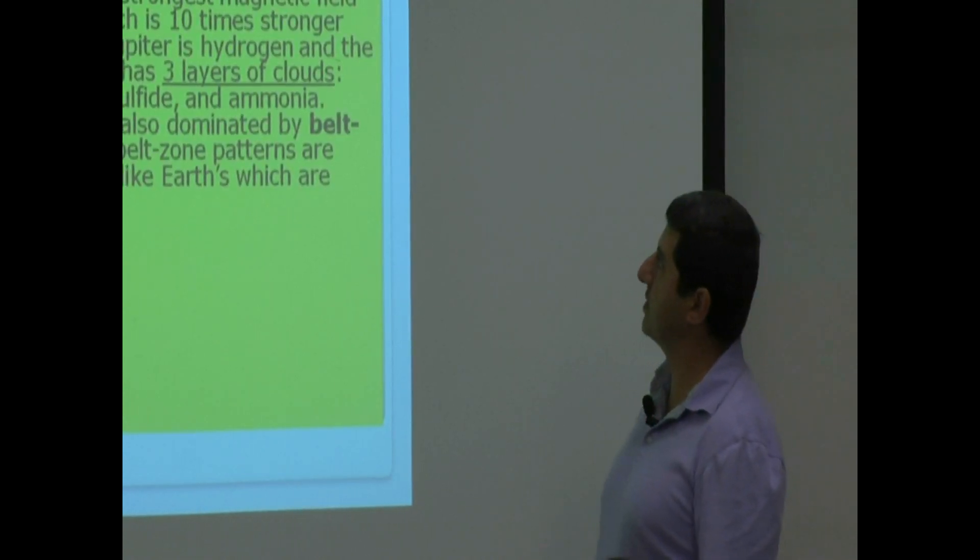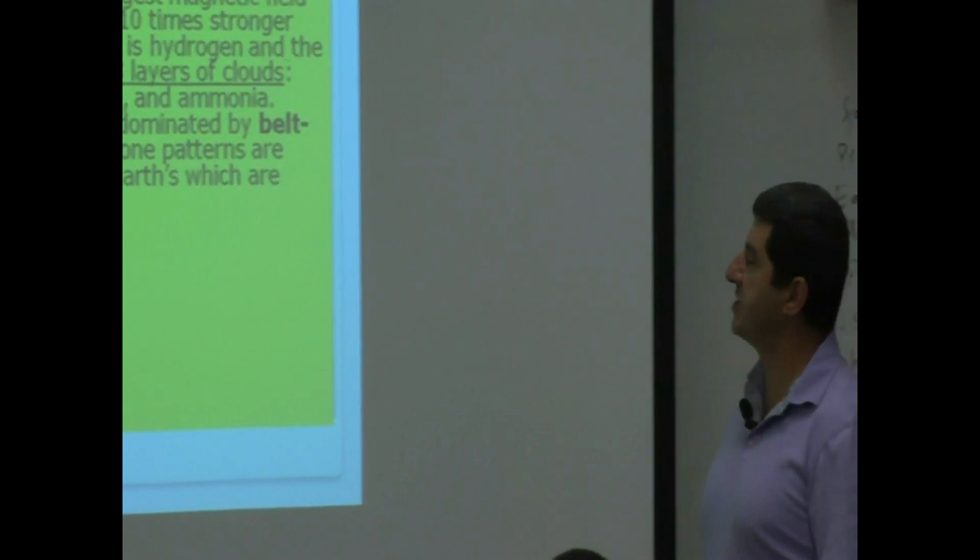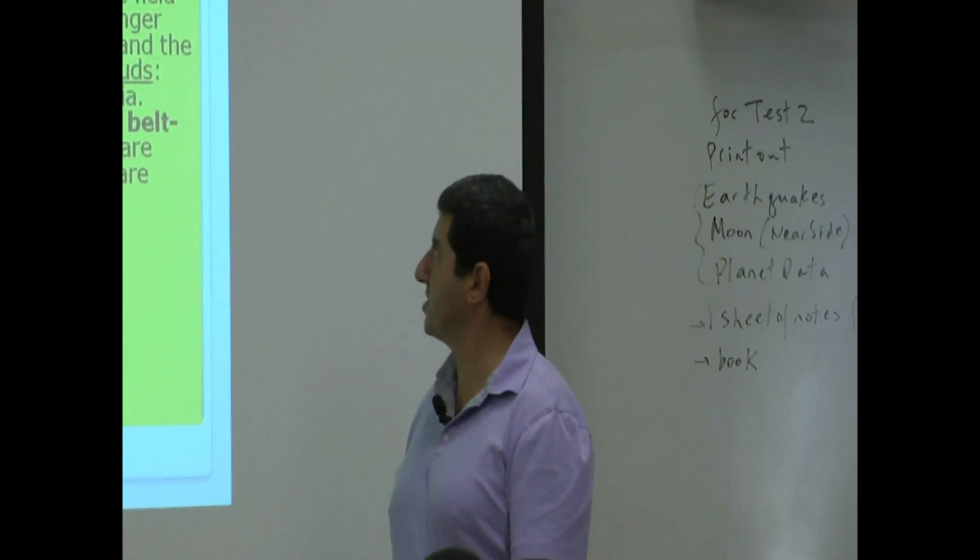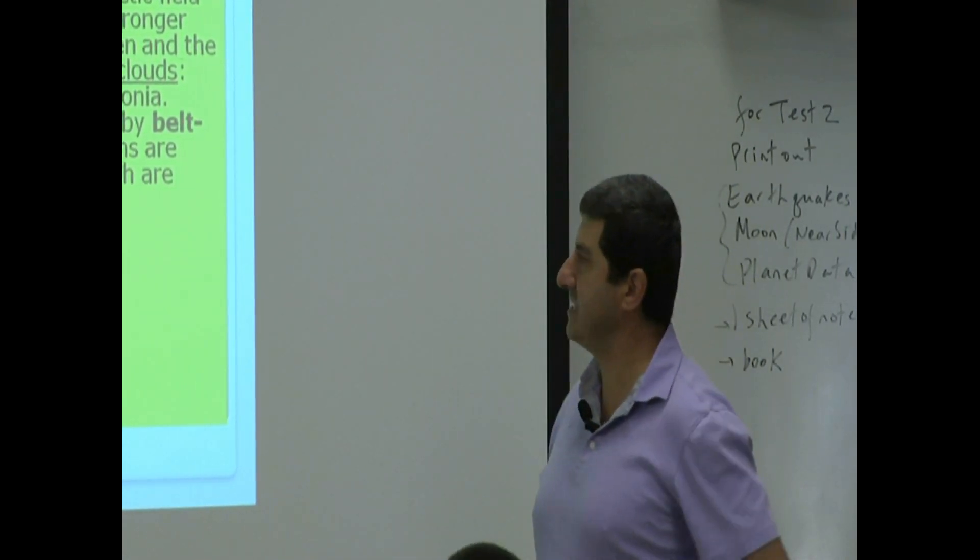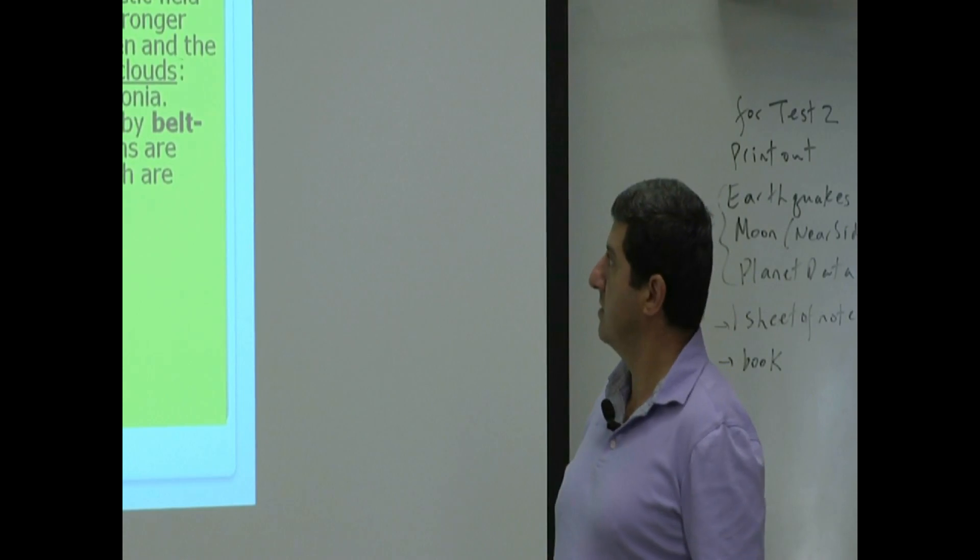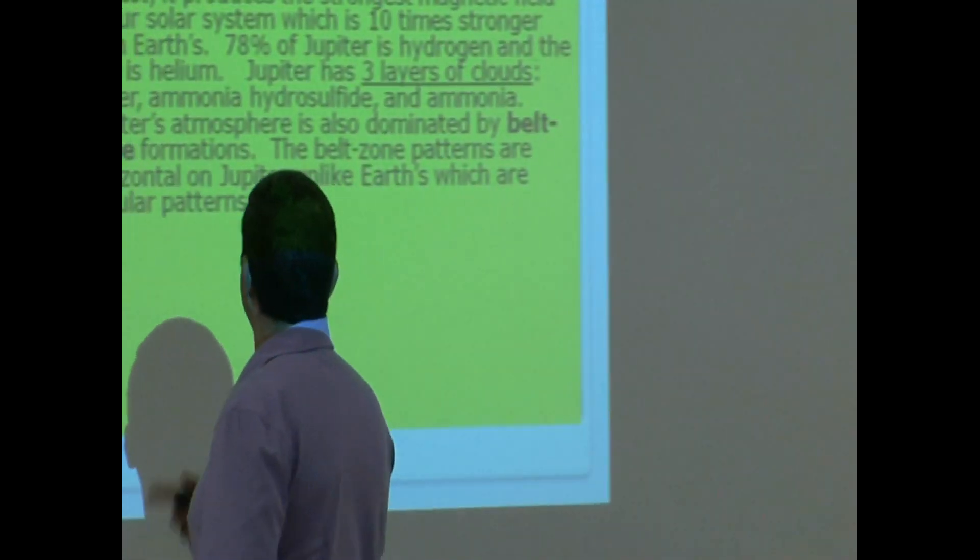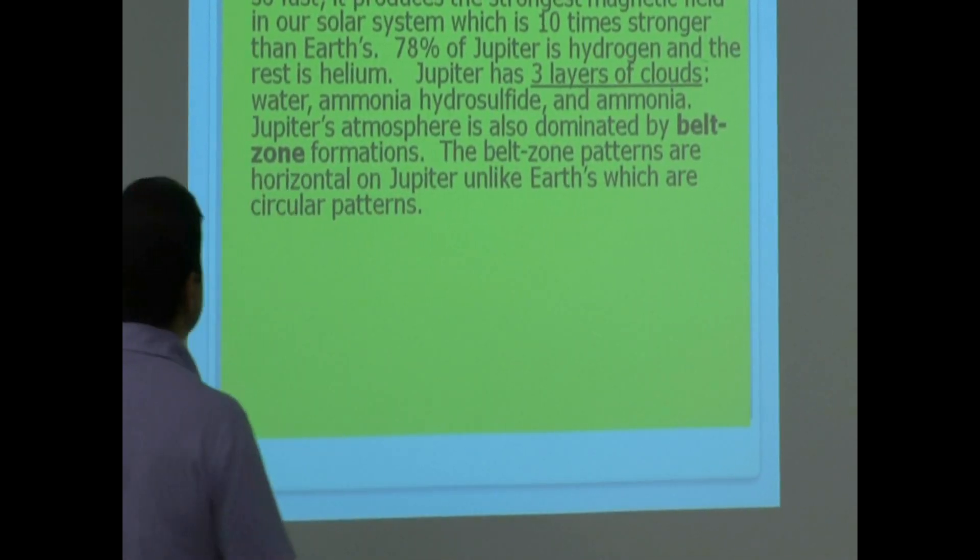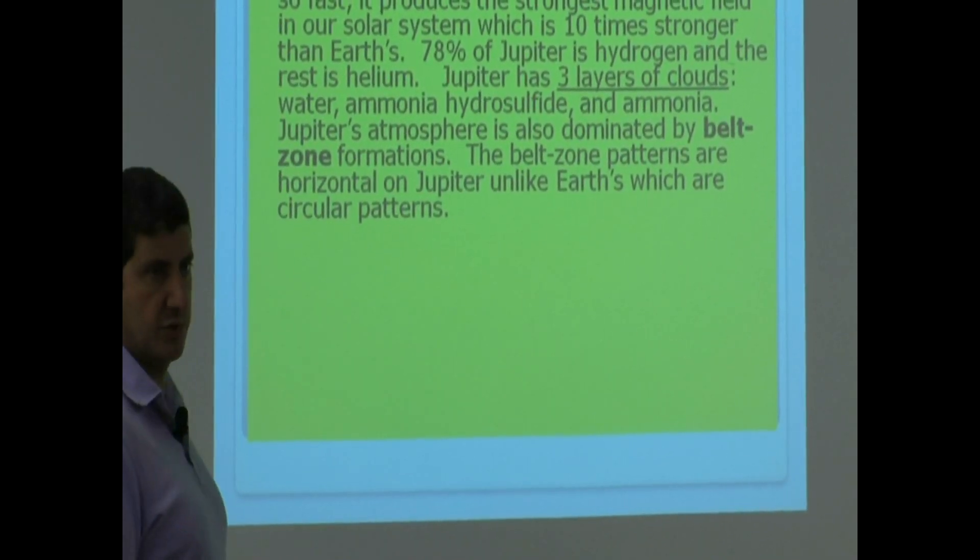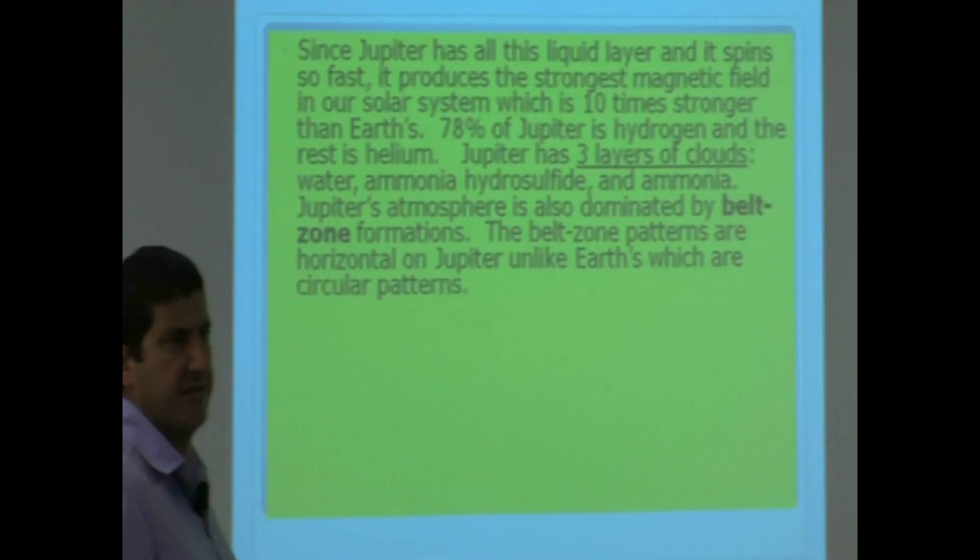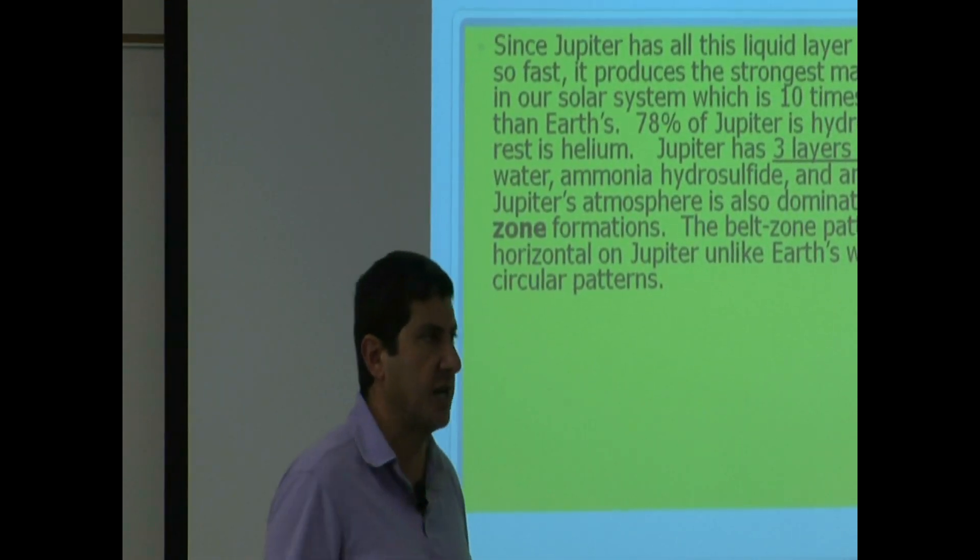Since Jupiter has all this liquid layer and it spins so fast, it produces the strongest magnetic field in our solar system, which is ten times stronger than Earth's. Seventy-eight percent of Jupiter is hydrogen and the rest is helium. So majority of Jupiter, it's kind of like our sun. Majority of it is hydrogen.